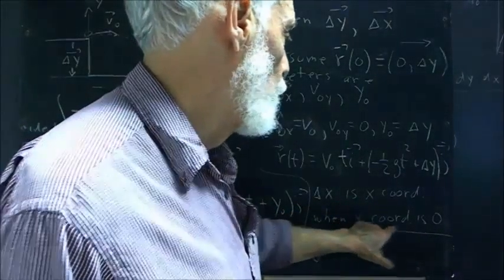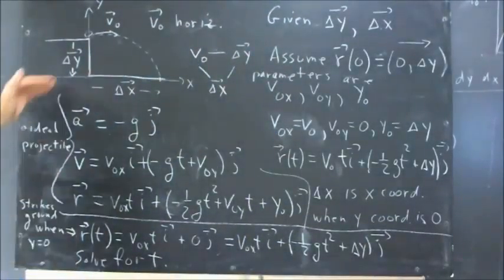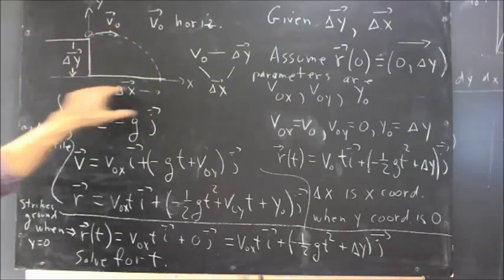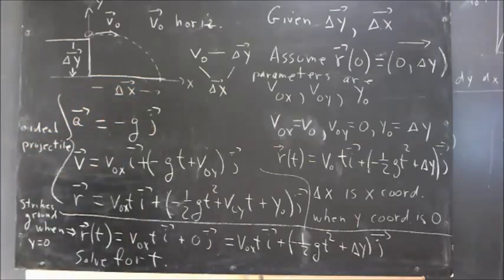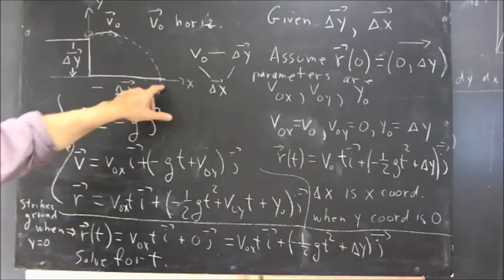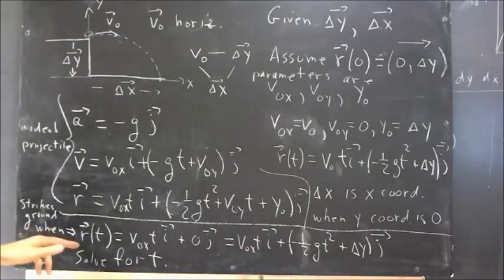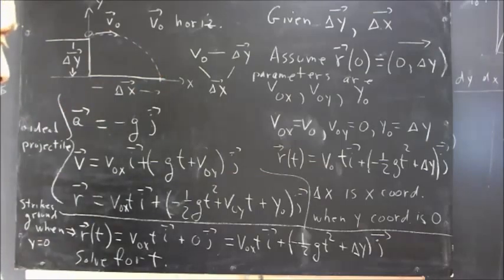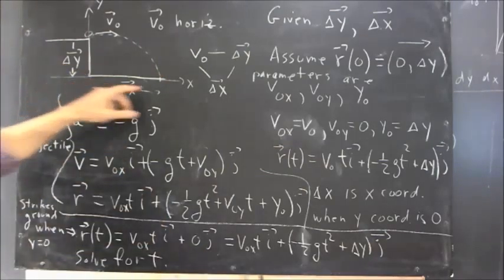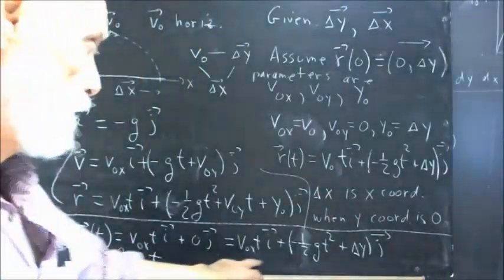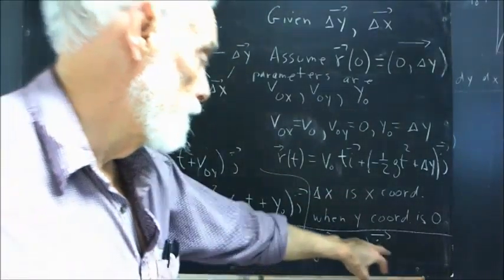Okay, so delta x then is the x-coordinate when the y-coordinate is 0. That should be obvious in the picture. The y-coordinate is 0 here, and that's where the projectile is at a distance delta x or at a displacement delta x from the origin. So we're interested in the condition for which this projectile strikes the ground. Well, the projectile strikes the ground when r of t equals v0 x t, which is the displacement in the x direction, plus 0 j because it strikes the ground when y is 0. And that has to equal this r of t function: v0 t i plus negative 1 half gt squared plus delta y j.